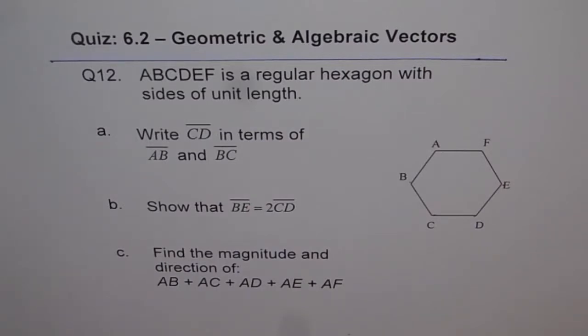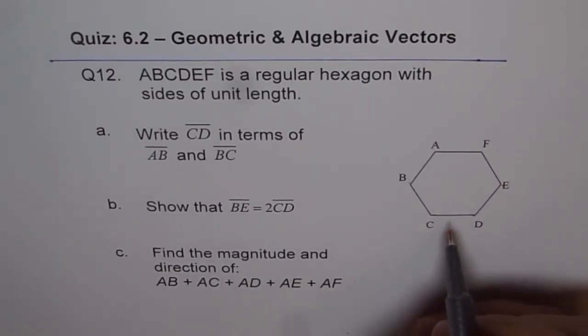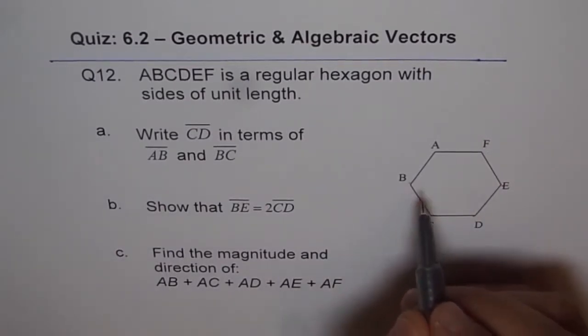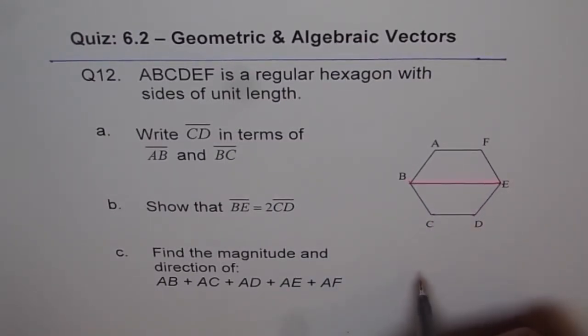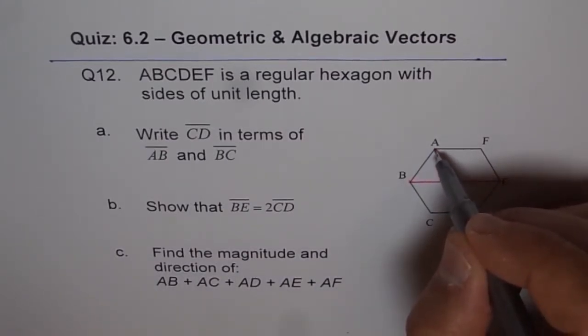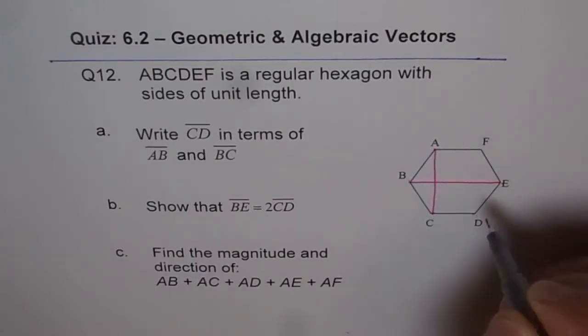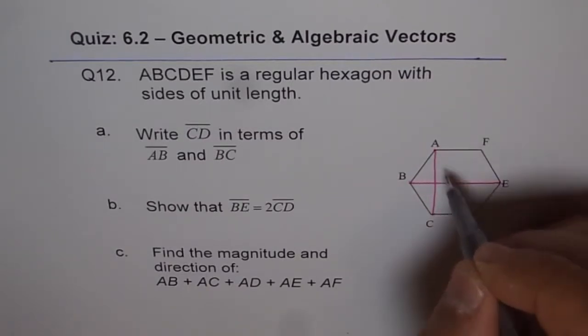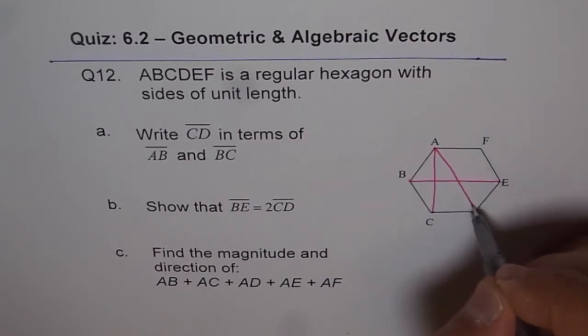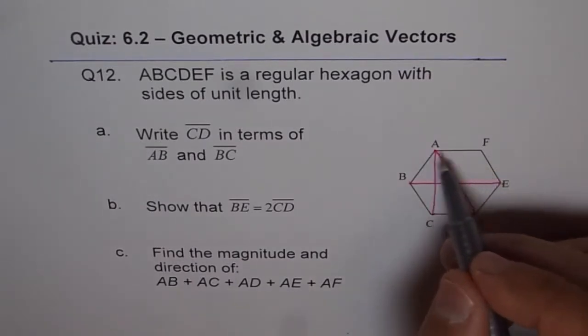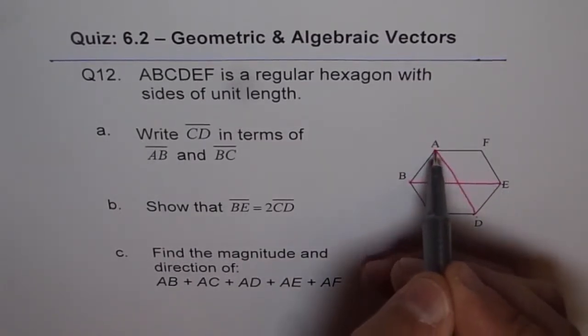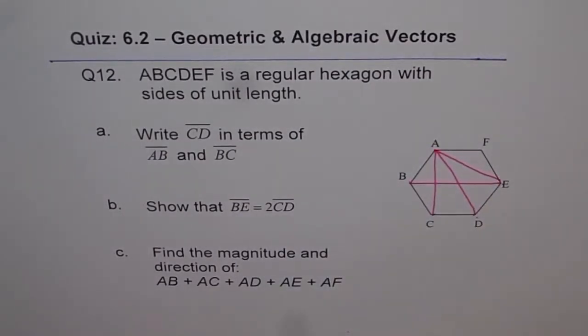To do this, let's start. First, let me join all these points and see what we get. I'm joining BE, which we need to prove as twice CD. Then here we have AB, AC. Let me join all these points to show you what we're trying to do here. Let me join AD and AE. These are our points.